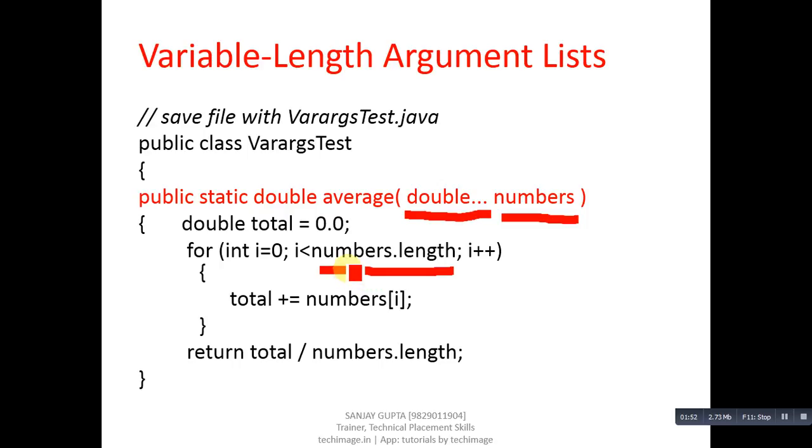Then total plus equals to numbers[i] will add all the elements which are available in numbers array and the result will be stored in total variable.